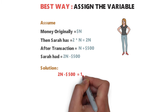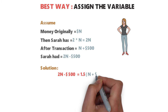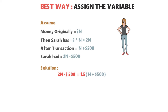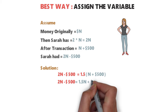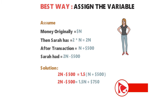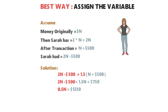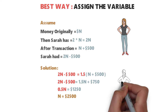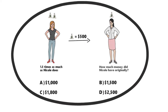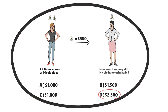Simplifying: 2N − 500 = 1.5N + 750, which gives 0.5N = $1,250, so N = $2,500. Nicole originally had $2,500. The correct choice is D. Hopefully you've nailed this question and now know how to answer similar problems on the test.